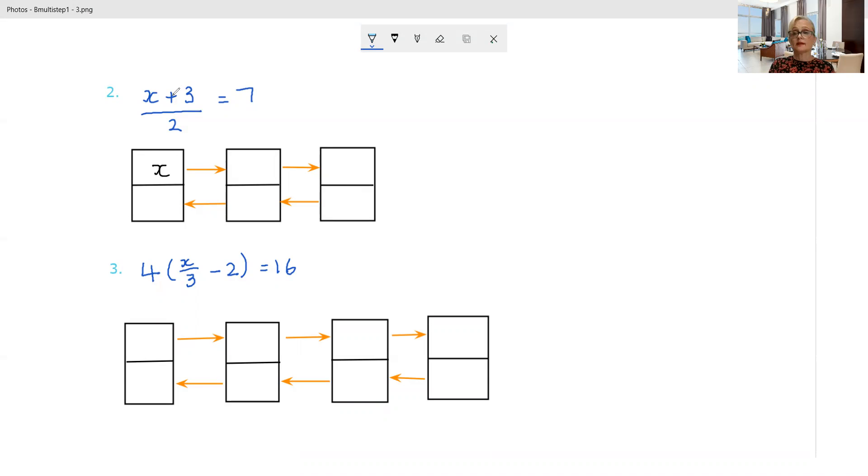So we've started with our x. What's the first thing that's been done to it? 3 has been added. How do I know that 3 has been added and 2 hasn't been divided first? Well, because this vinculum, this divided by line kind of means that there are brackets there. It means that the whole thing is divided by 2. So 3 is added and then it's divided by 2 to give us x plus 3 on 2. If you divided by 2 first and then added 3, it would be x over 2 plus 3, which is different.